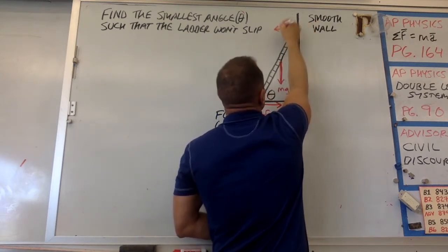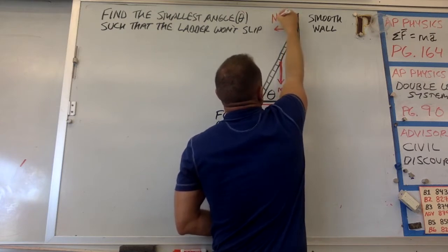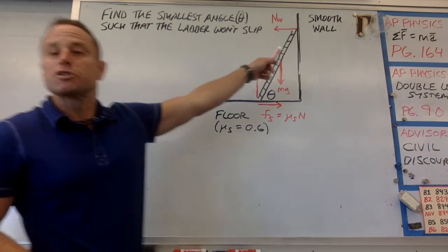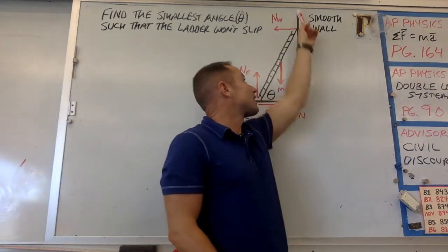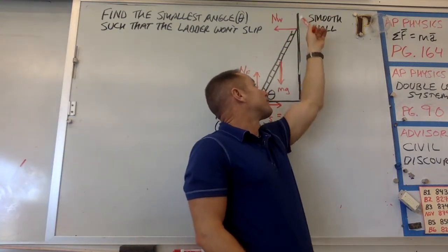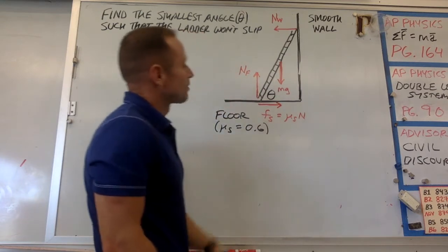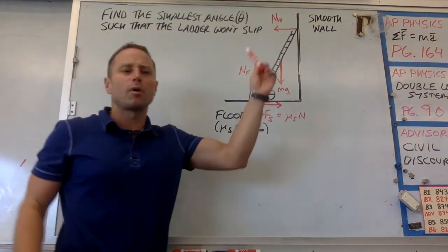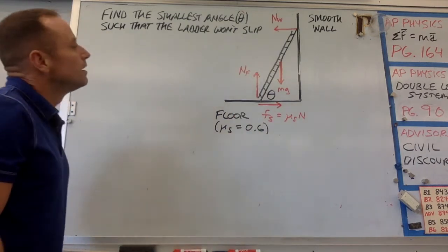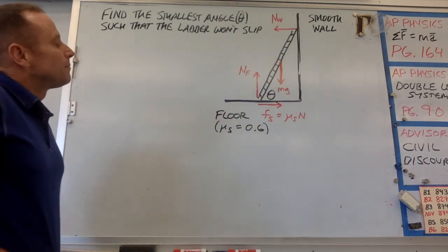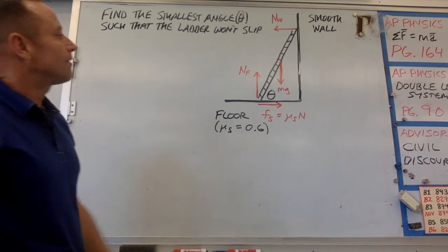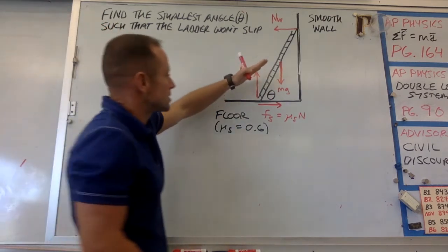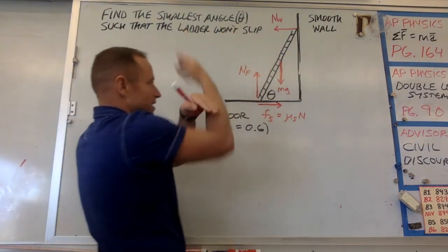Where the ladder is in contact with the wall, the wall pushes out, so there's a normal force from the wall — call that NW. If the wall is smooth, there's not going to be any friction force along the wall. We've baked it into the problem that it's frictionless, so there's no component of force along the wall. So those are all our forces, and what we want to figure out is the smallest angle we can have before the ladder slides away.